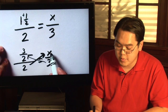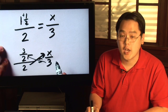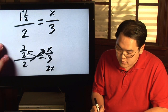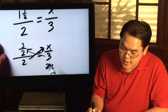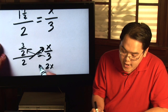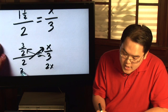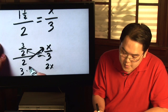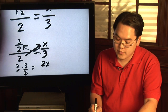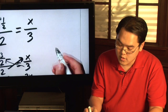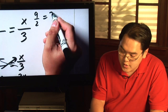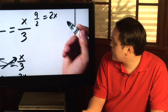Take the two, multiply it with the x and you will have two x, and then take the three and multiply it by the three halves. Now three times three halves will give you nine over two equals two x.